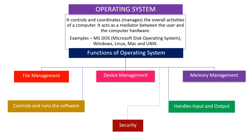What are the functions of an operating system? The first function is file management. Second, device management. Third, memory management. Fourth, it controls and runs the software. Fifth, it handles input and output. And last but not the least, security.